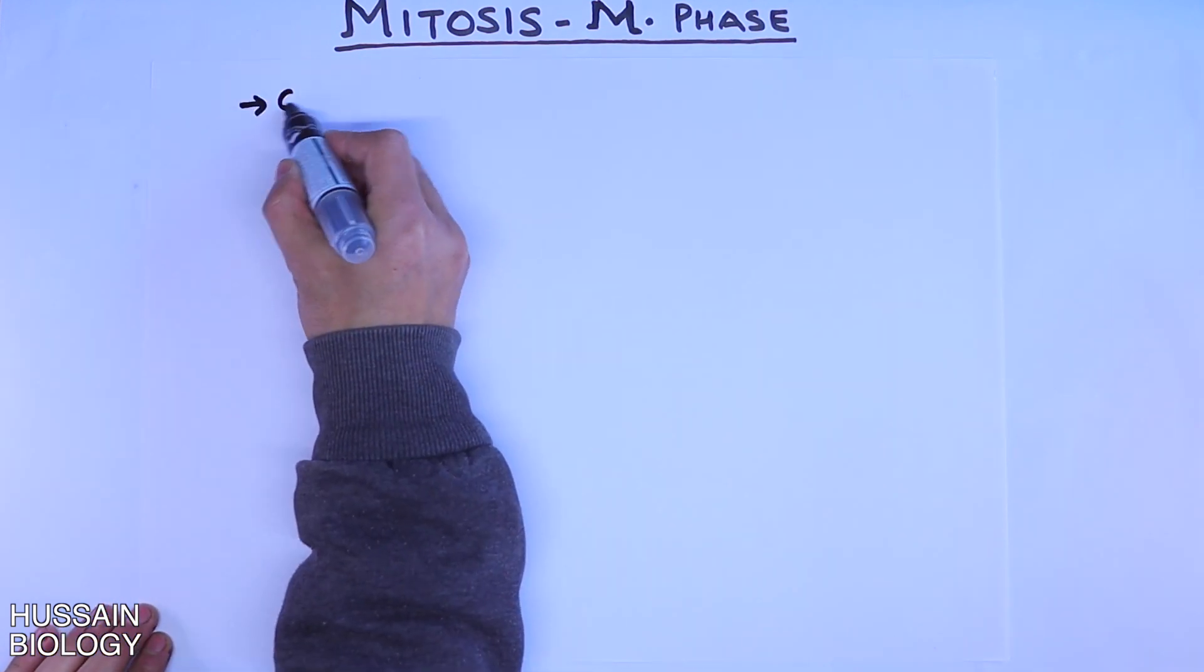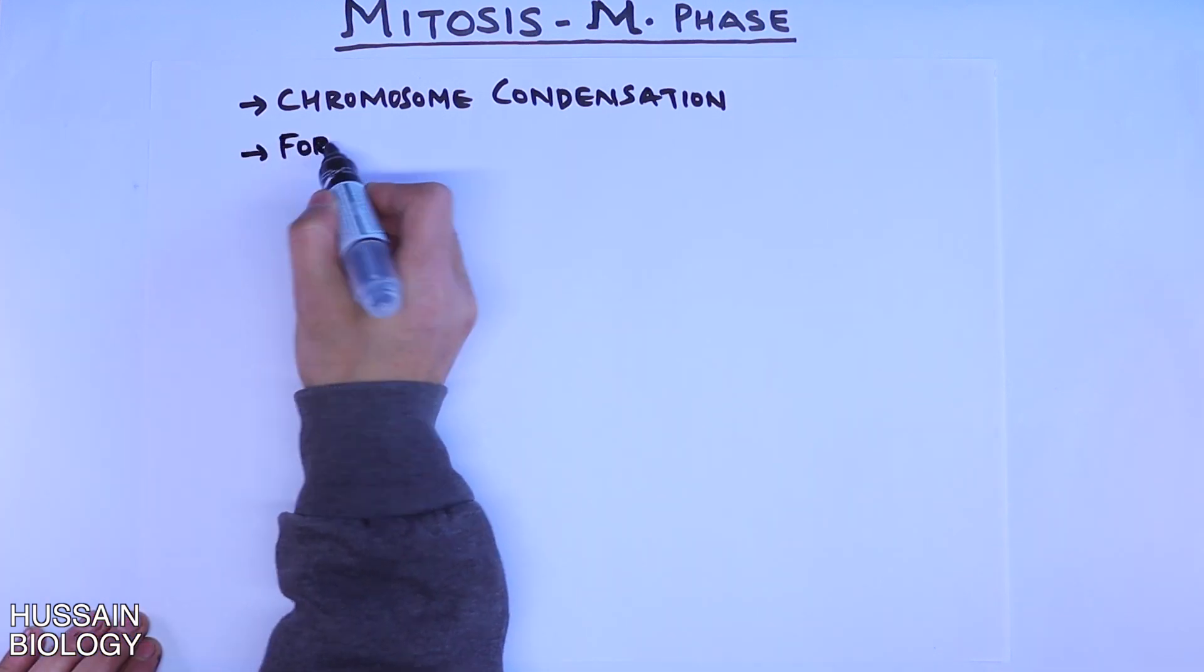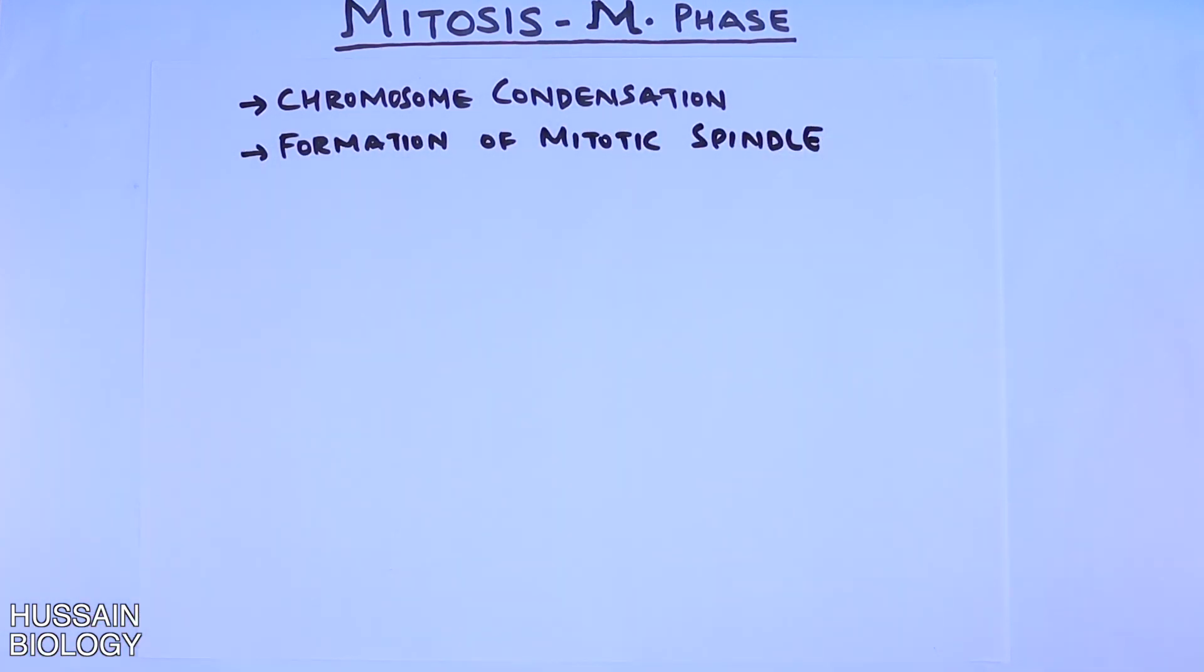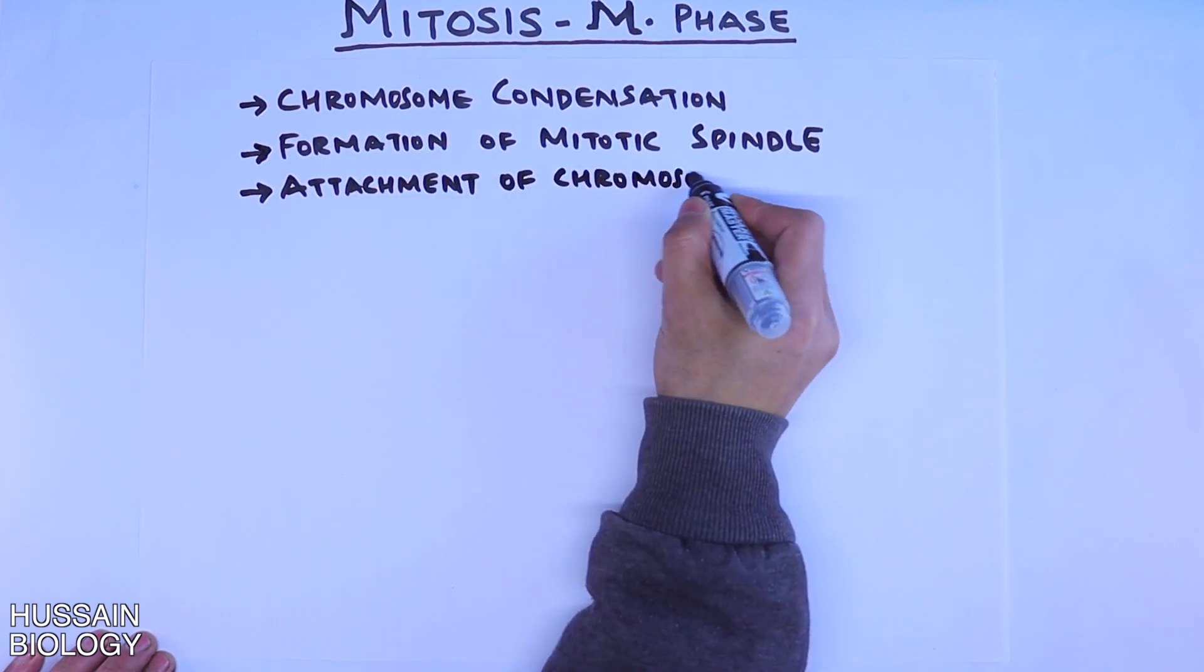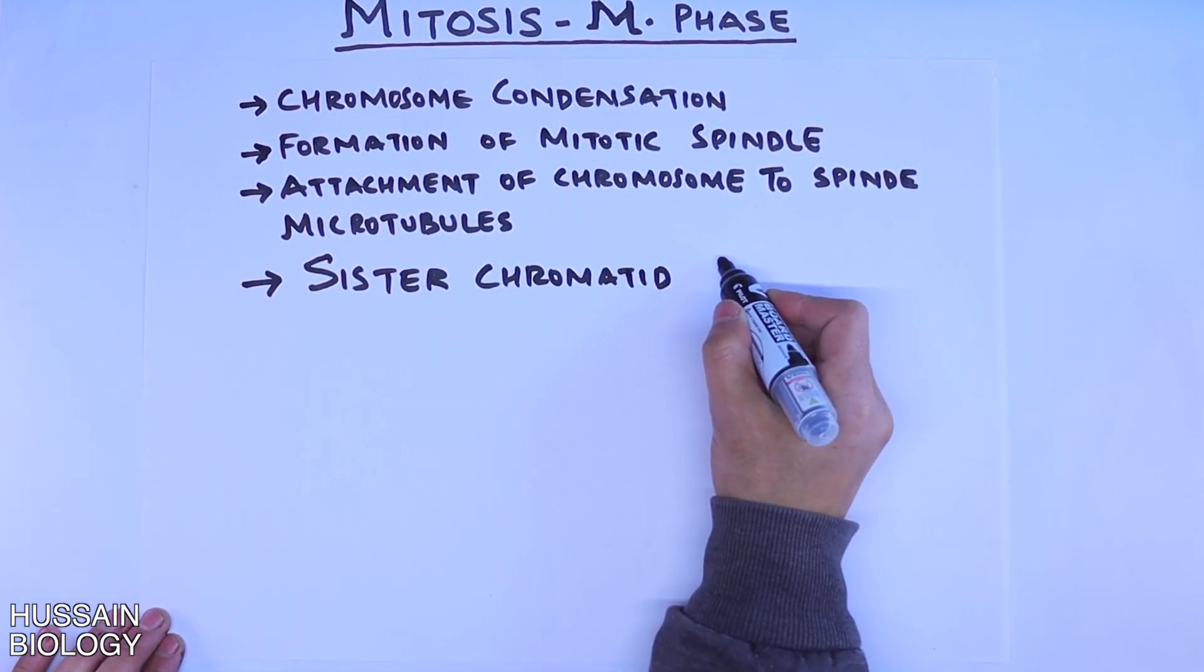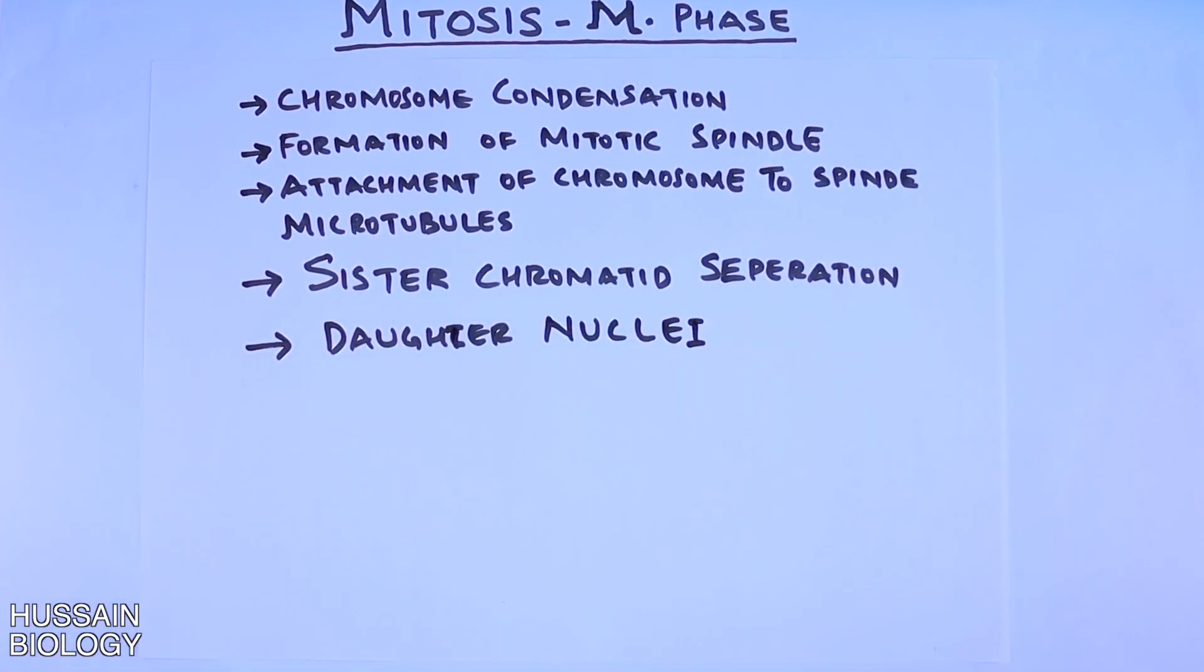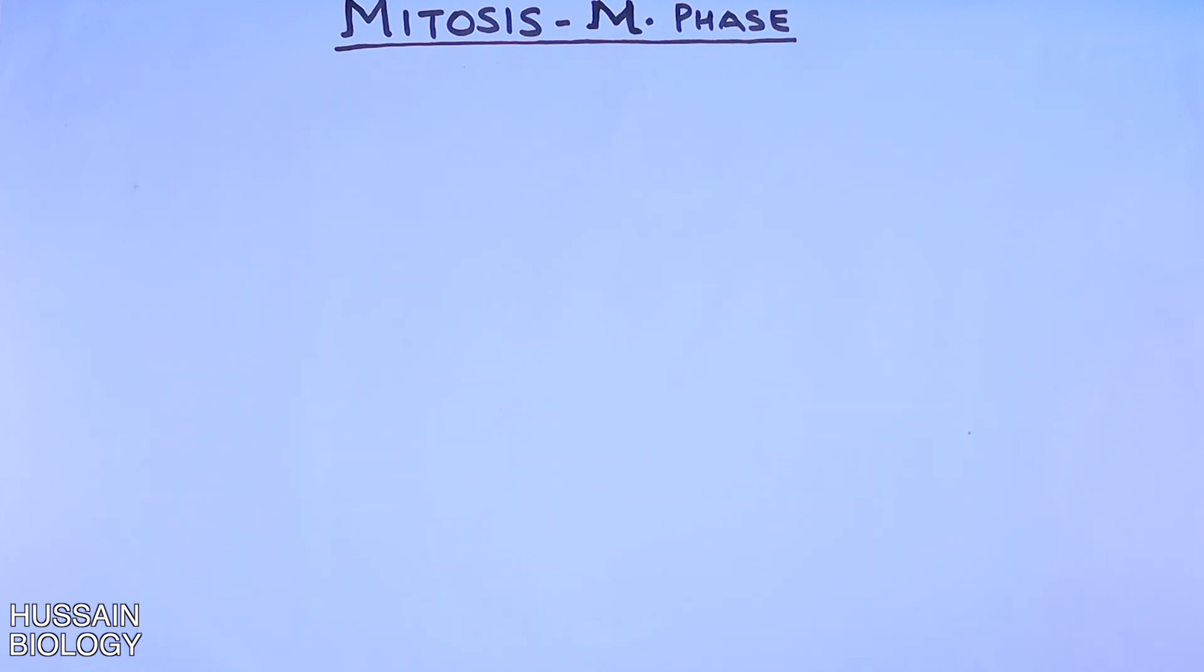The first event that occurs in M phase is chromosome condensation, which is followed by the formation of mitotic spindle. Then we see the attachment of chromosomes to the spindle microtubules, which is followed by sister chromatid separation. And ultimately, we have the formation of two daughter nuclei. Let's see all the events in detail in their respective phases.